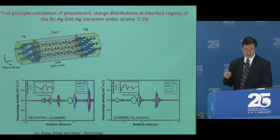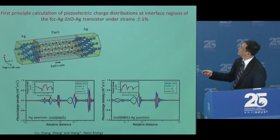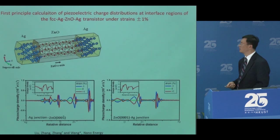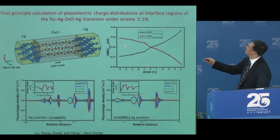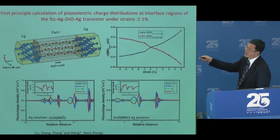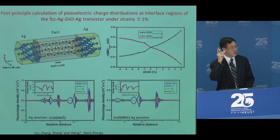Through first-principles calculation considering the polarity of zinc oxide, we can predict polar charge distribution at both end interfaces. We derived the change in Schottky barrier height — at one end it drops with increasing strain from compressive to tensile, while at the other end the barrier increases. This opposite change at the two ends is exactly what we expect from the physical picture, and the calculation proves it.